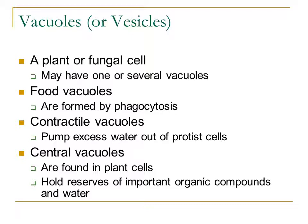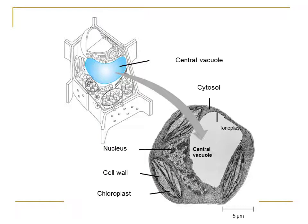Another type is the central vacuole, found in the middle of plant cells. It encompasses a huge portion of a plant cell and holds reserves of organic compounds or water for the plant to use whenever it needs them. If you have house plants and forget to water them, they start to wilt because that central vacuole within your plant cells is starting to shrivel from lack of water. You can see in the illustration how large the central vacuole is within a plant cell.